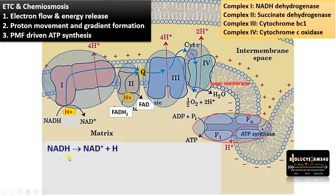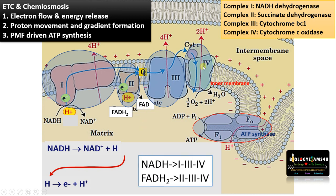NADH formed during the Krebs cycle becomes NAD+ plus H, releasing electrons and protons. These electrons enter complex 1 from NADH, then move to complexes 3 and 4, finally reducing molecular oxygen to form water. In the case of FADH2, electrons are donated to the second complex, succinate dehydrogenase — the enzyme also involved in the Krebs cycle and located on the inner mitochondrial membrane — and similarly flow through to reduce oxygen to water.